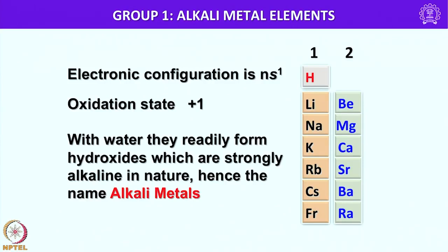I shall draw your attention to only lithium to francium, and we have totally 6 elements: lithium, sodium, potassium, rubidium, cesium and francium. To have some analogy with the next group element, that is alkaline earth elements, I have also listed here group 2 elements which starts with beryllium, magnesium, calcium, strontium, barium and radium. We come across some similarities between them, and those things I shall discuss when I move to group 2 chemistry.